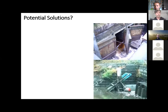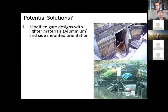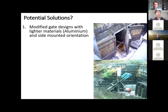Trying to bring it around to potential solutions: one thing you can do is get rid of the heavy cast iron top-mounted gates. Moving to a lighter material like aluminum and putting it on a side-mounted orientation just allows it to open a lot more freely. That's one thing that's quite simple — you can go in and modify the gates without actually modifying the whole system.